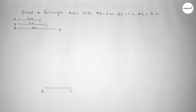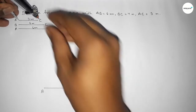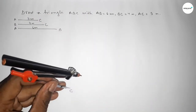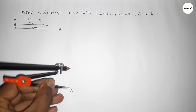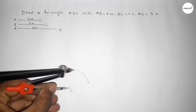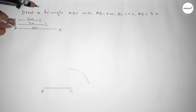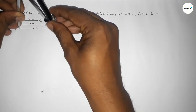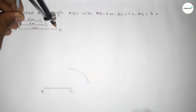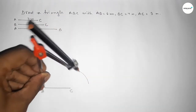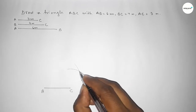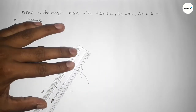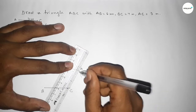Now taking the length AC equal to 3 centimeter using a compass, placing the compass on point C and drawing an arc. Then taking the length AB equal to 6 centimeter, placing the compass on point B and drawing another arc. Both arcs intersect at a point — we mark that as point A.